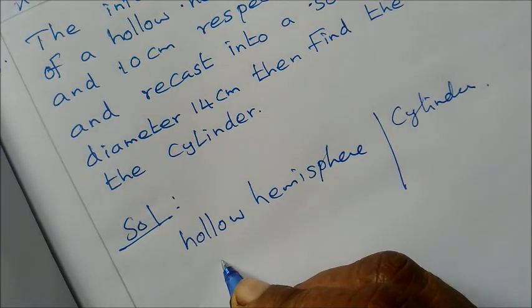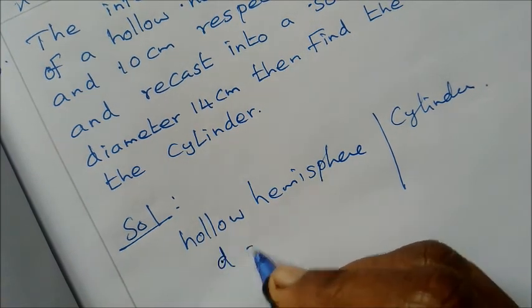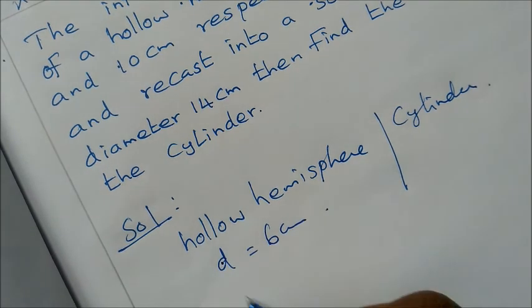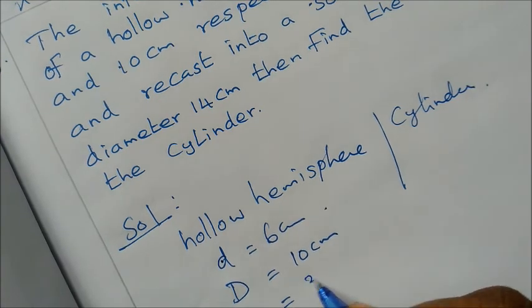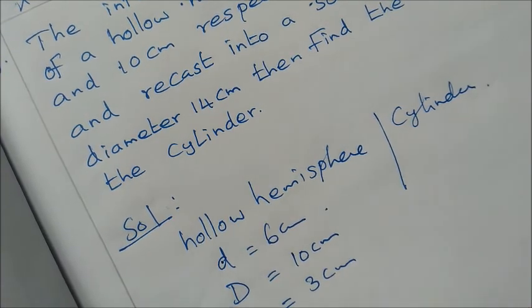For the hollow hemisphere, small d is 6 cm, capital D is 10 cm. So small r is 3 cm, capital R is 5 cm.